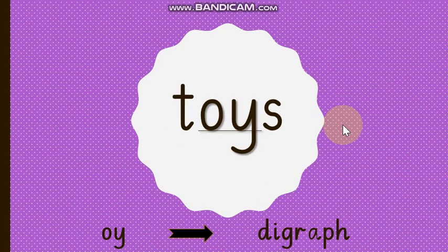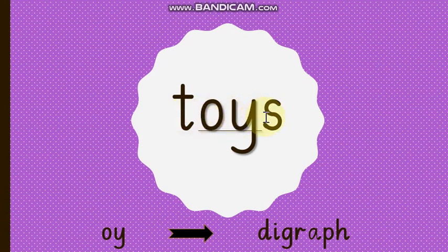The next word is TOYS. It is an OY word. OY is a digraph in this word. Let's read it with sound — TOYS. Now blend it — TOYS. Very good. The word is TOYS.